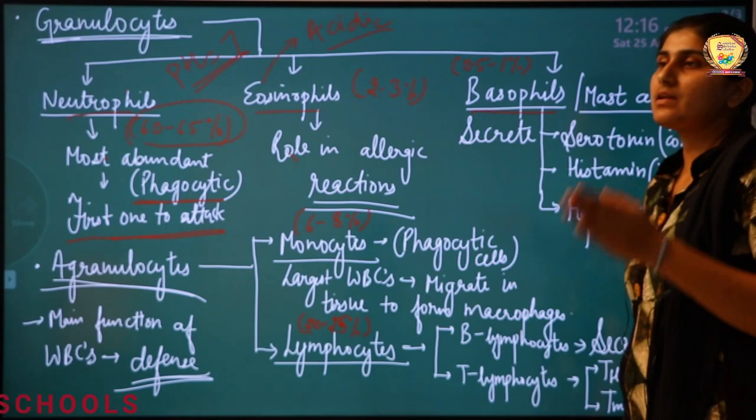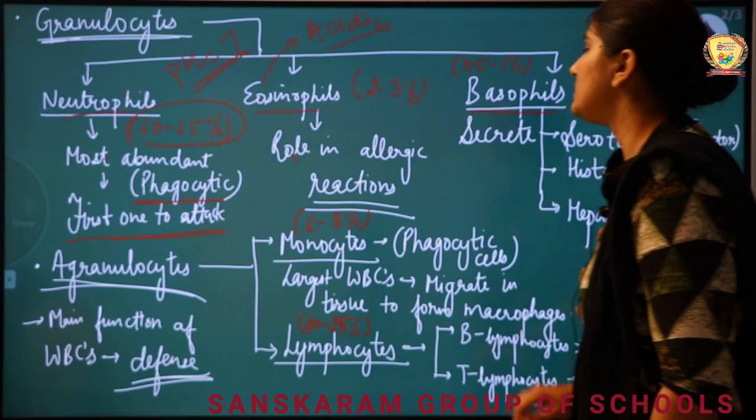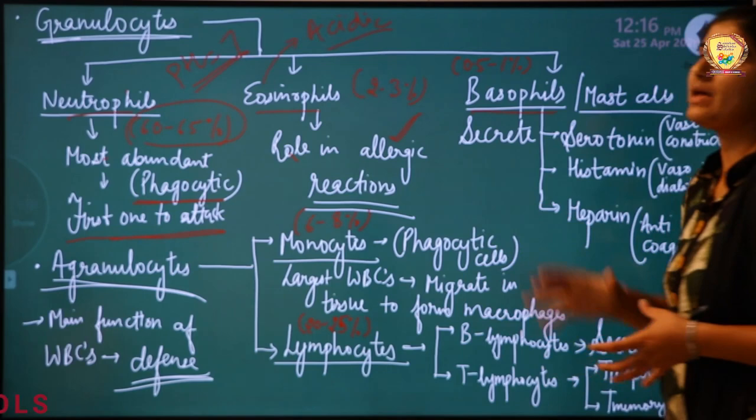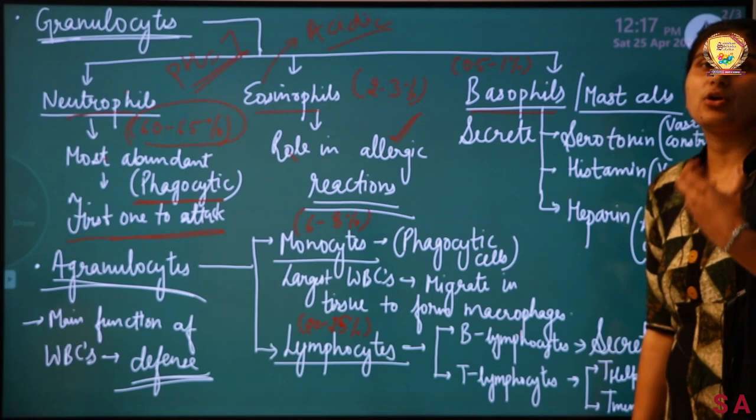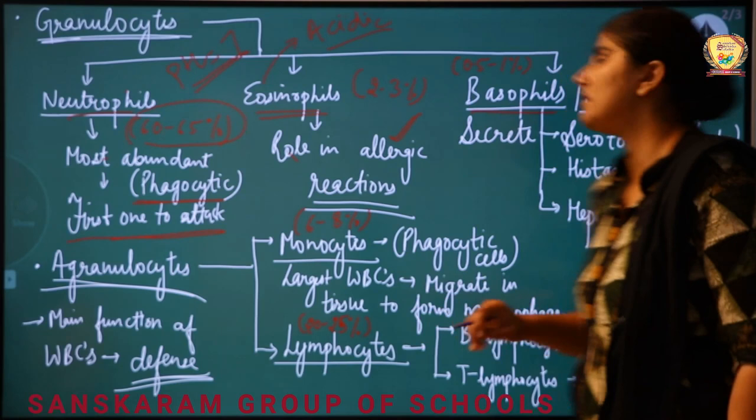To summarize neutrophils: the first ones to attack are neutrophils. Now coming to eosinophils — their main role is in allergic reactions and hypersensitive reactions. When a person is allergic to something and that allergen enters the body, eosinophils play the key role there.